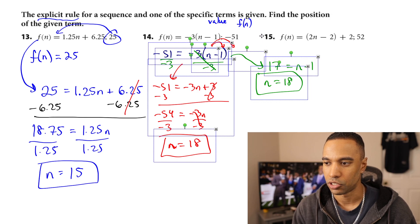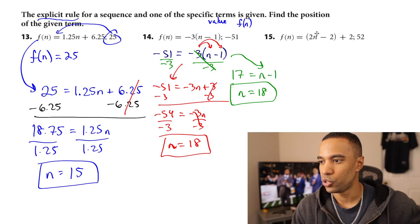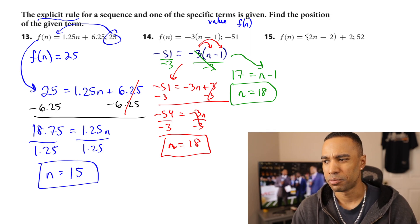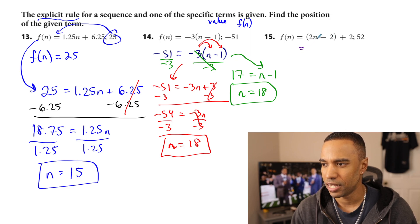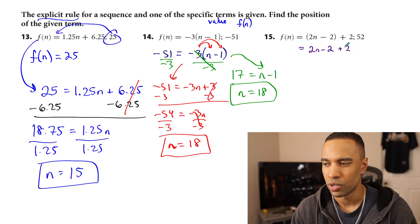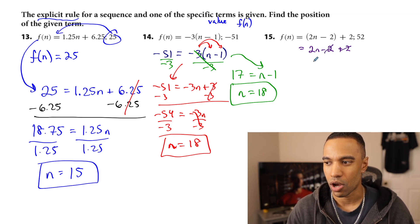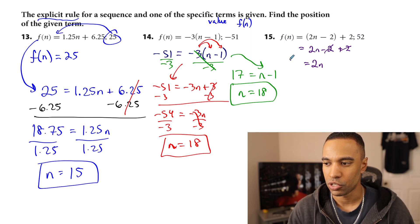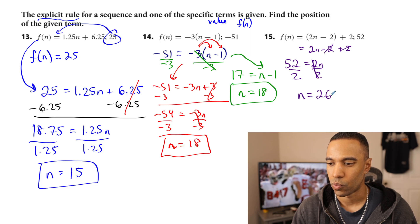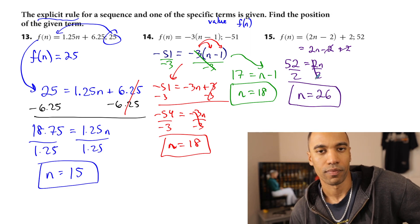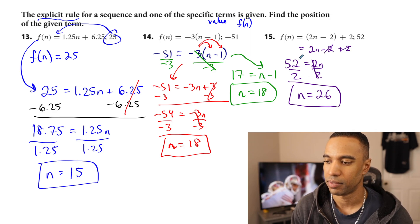Number 15: f of n equals 2n minus 2 in the quantity plus 2, and we substitute 52. Let me clean this up — 2n minus 2 plus 2. The parentheses might be there to confuse you, but negative 2 plus 2 is 0, so all you're left with is 2n. f of n is 52: divide both sides by 2, and we get n equals 26. The 26th term is 52. Following the rule 2n, the first term is 2, second is 4, 6, 8 — going up by twos — so the 26th term gives us 52.